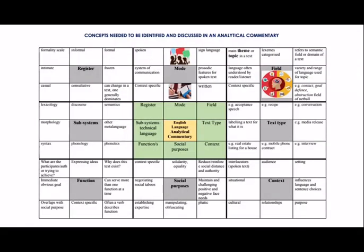This is a lotus chart of the concepts you need to identify and discuss in an analytical commentary. The green ones in the middle are the things you need to discuss, and each one is expanded upon in the outer boxes. I recommend you print this off and read through it — there's also a blank one on Google Classroom to use as a planning document. When you have a text, go through and fill in each little box. For example, under 'field,' the top left box says 'main theme or topic in a text' — you would write the actual main theme from the text you're analyzing.